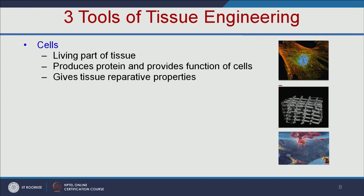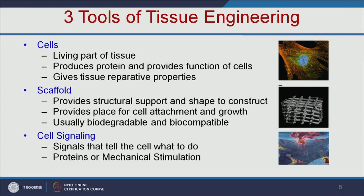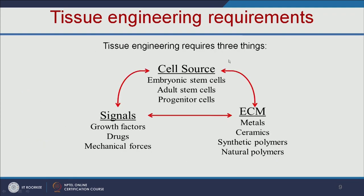The tools required for tissue engineering are cells, scaffold, and cell signaling. Cells are the living part of tissue that produce proteins and provide cellular functions. The scaffold provides structural support and shape, and should be biodegradable and biocompatible. Biocompatible means compatible with the biological system, and biodegradable means it should not induce any immune response or toxic effects when it degrades. Cell signaling — such as growth factors or hormones — tells the cell whether to differentiate and what kind of cells to become.